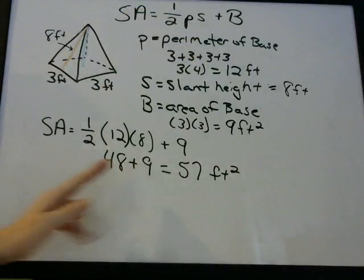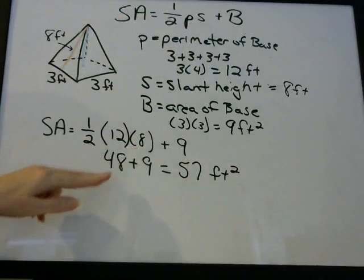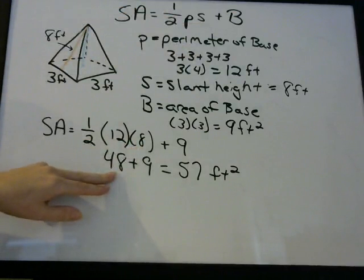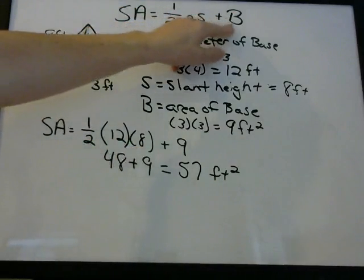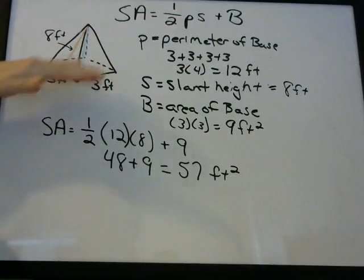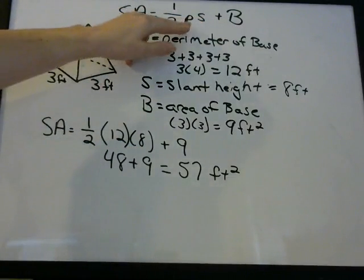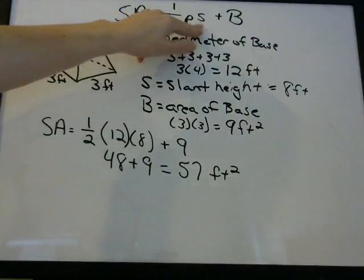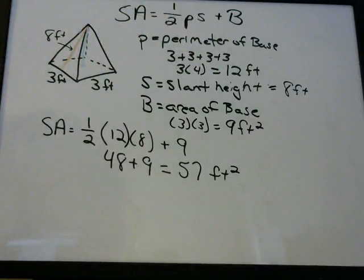In that case, it would just be one-half times 12 times 8, which is 48. You need to understand this formula — the B part is the area of the bottom, and the first part gives you the total surface area for those four triangles.